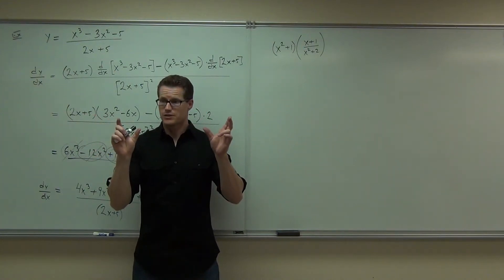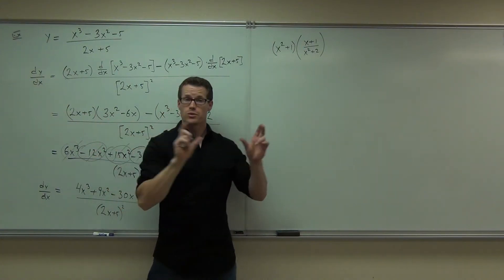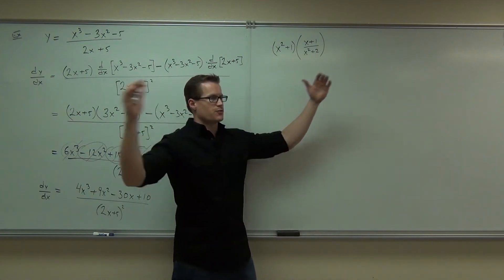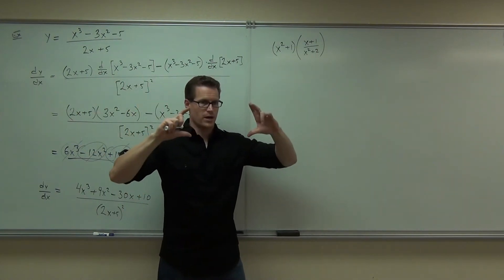Function of x times a function of x. That's product rule. Then when you go through that, as you're doing that, that's the first thing you see. From the outside in, you see a product rule.